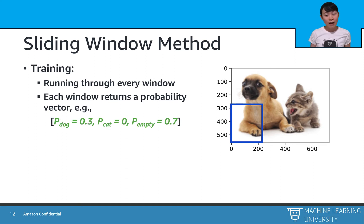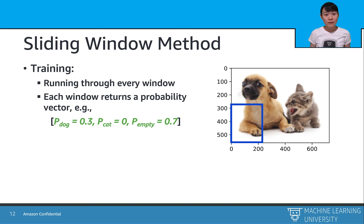Then how do we classify the box? For each class, we have a threshold p. For example, p can be 80% or 90%. If the prediction confidence of a given box is smaller than the threshold, we throw away this box for the objective class.